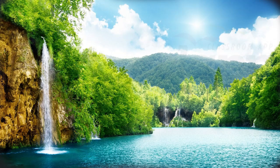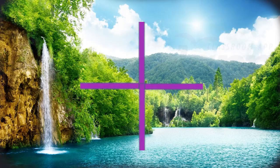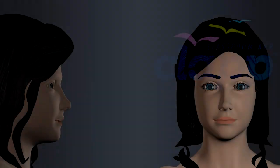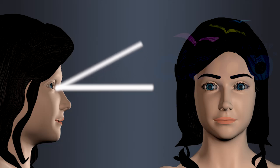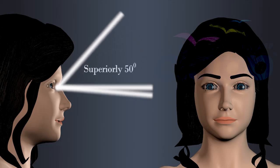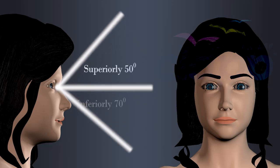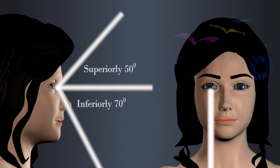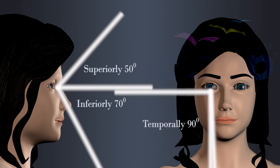Binocular vision of the human eye: the visual field is a three-dimensional area of surroundings that can be seen at one time around an object of fixation. Normally, the visual field is superiorly 50 degrees, inferiorly 70 degrees, temporally 90 degrees, and nasally 60 degrees.